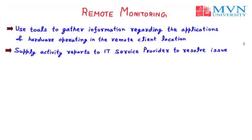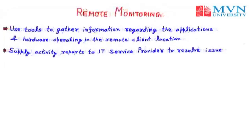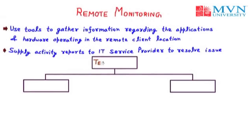The next part of remote monitoring is to supply activity reports. Whenever information is collected about the remote server or client, it is gathered and reported to the IT service provider. The IT service provider then tracks the information and resolves the issue. In remote monitoring we have two different techniques.